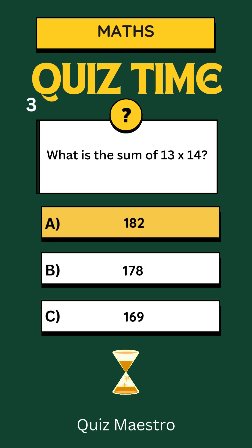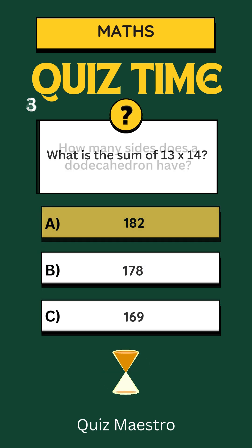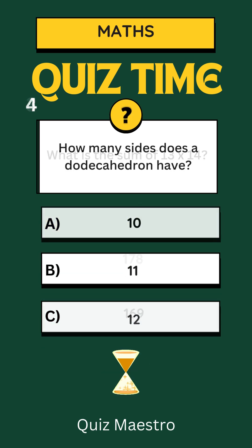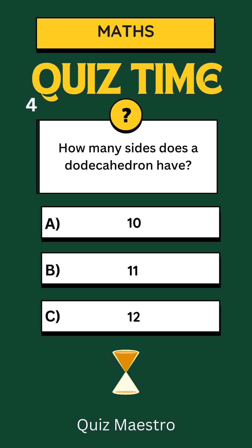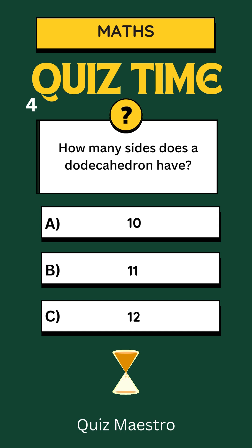is a) 182. Question 4: How many sides does a dodecahedron have — a) 10, b) 11, or c) 12?